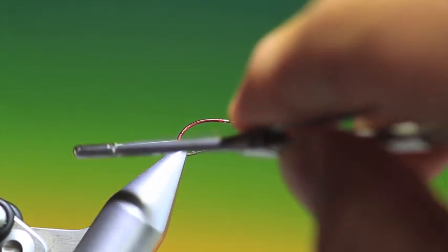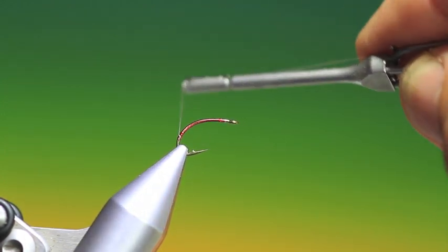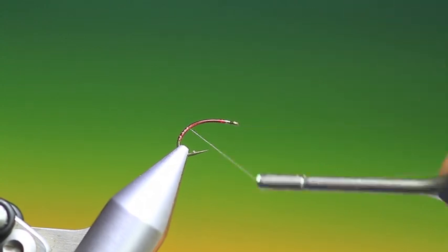So now we want a little bit of red left there so we'll just go around there once like so. Then we'll go up with the thread just to make a super fine rib.